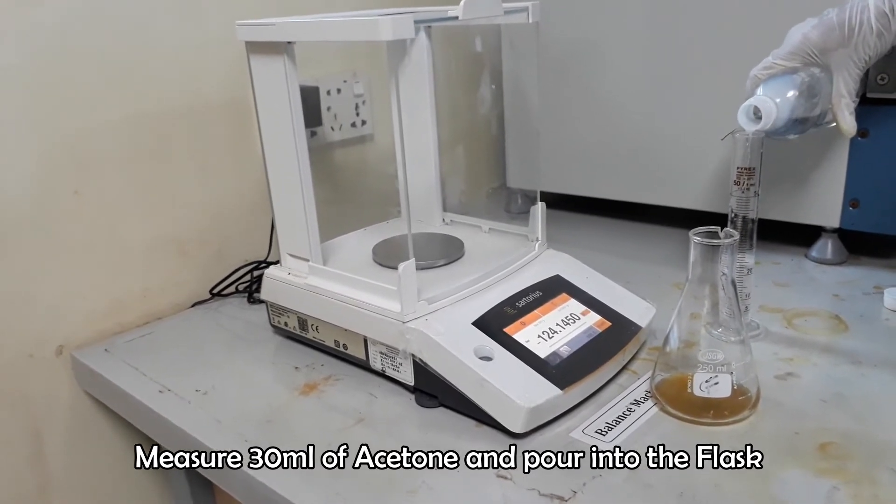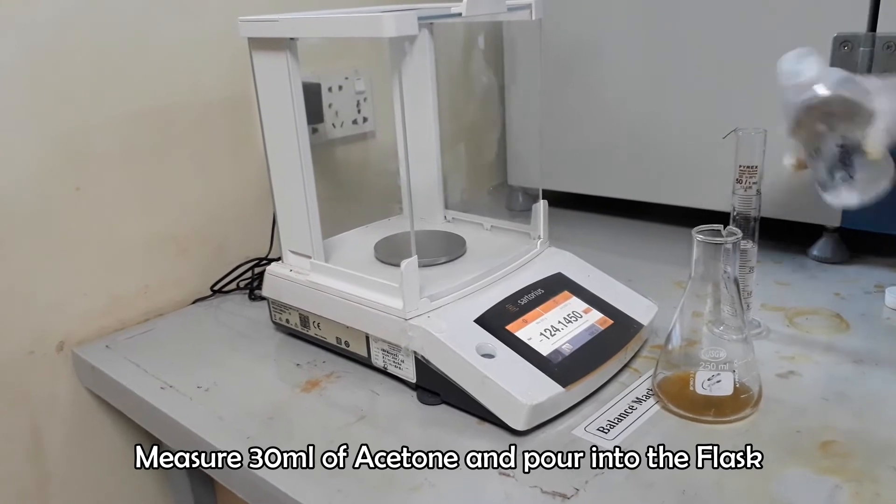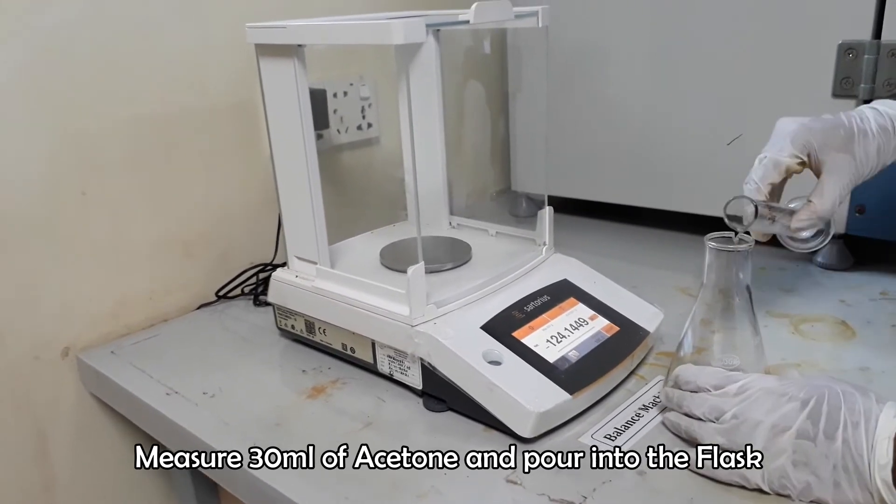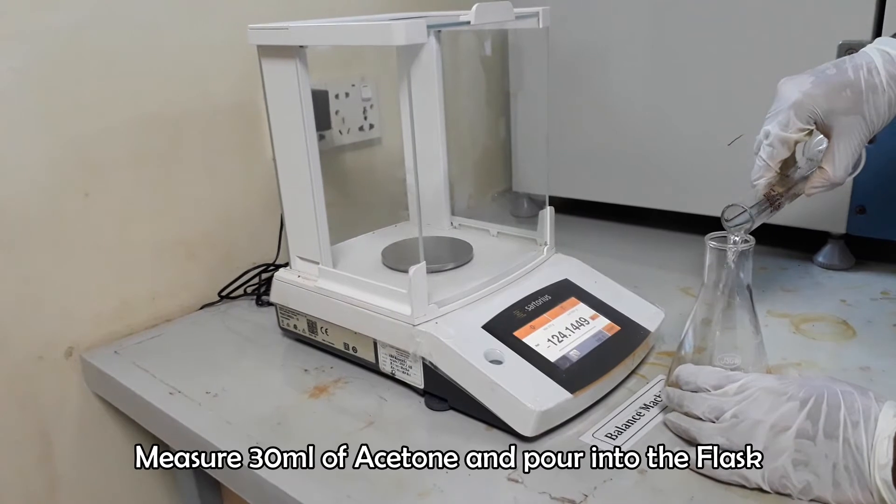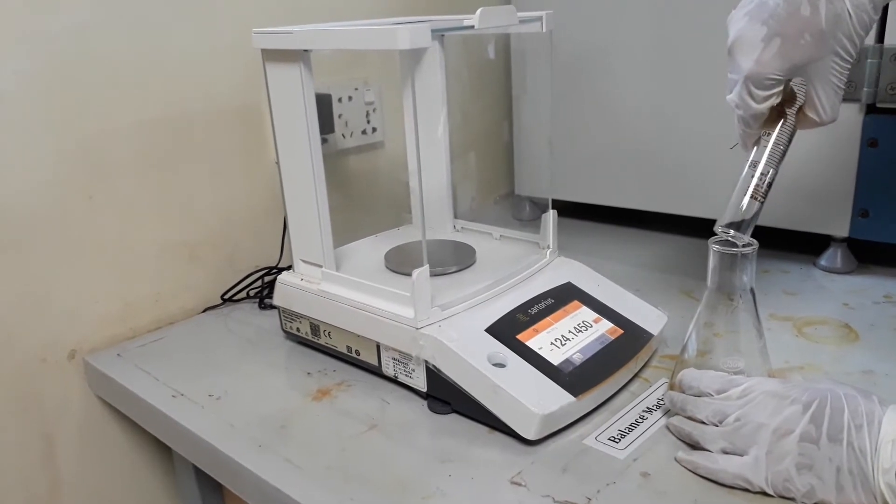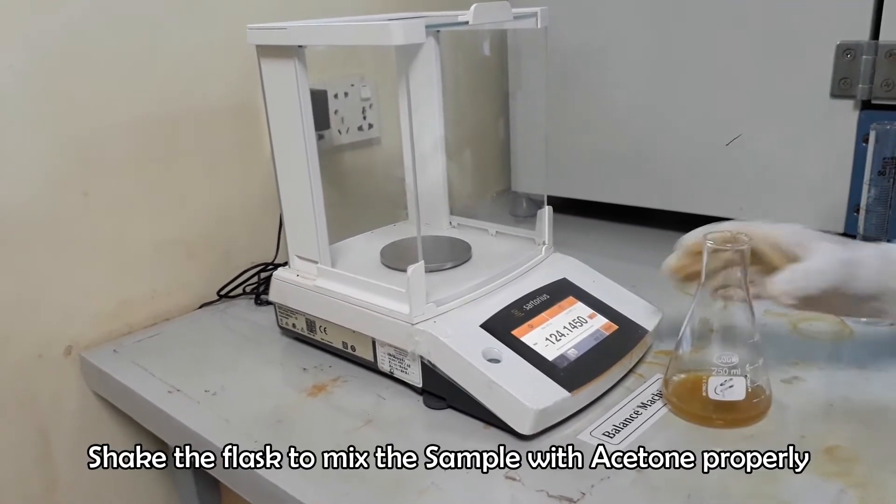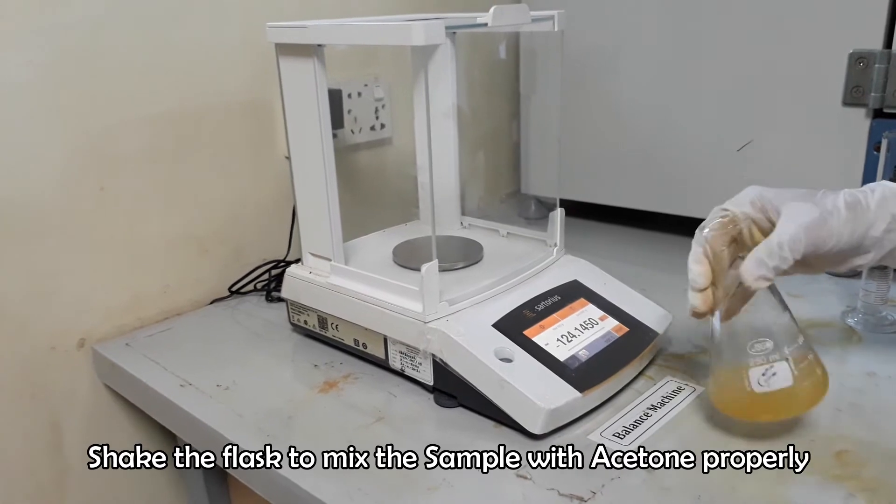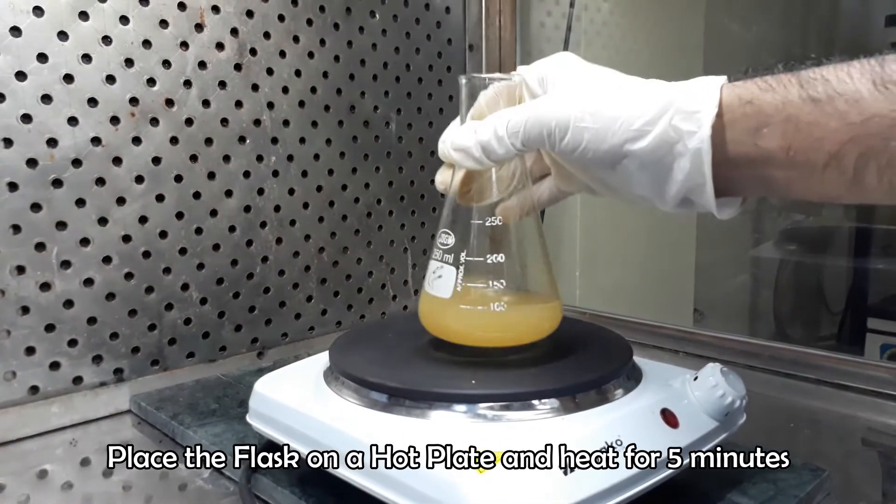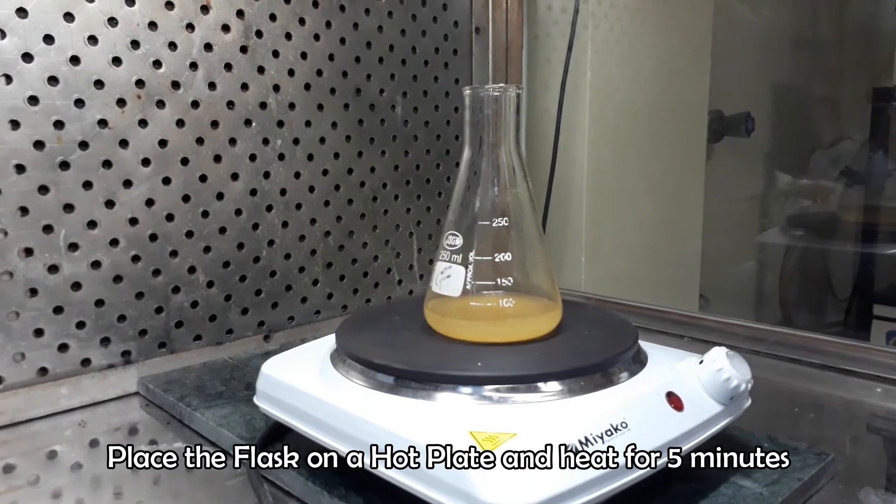Measure 30 ml acetone and pour into the Erlenmeyer flask containing the oil sample. Shake and rotate the flask to mix the sample with acetone properly. Heat the mixture on hot plate for 5 minutes.